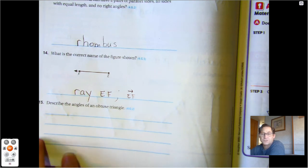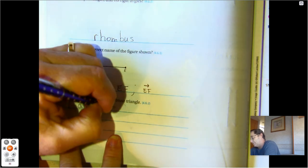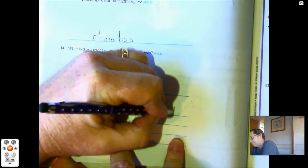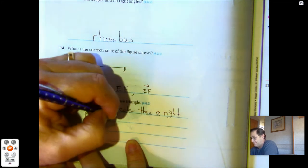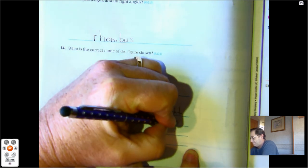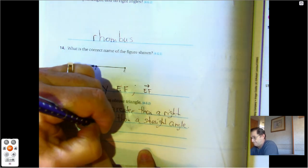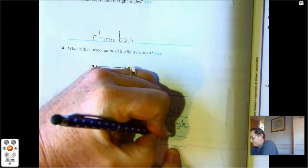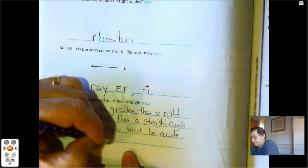Describe the angles in an obtuse triangle. One angle is greater than a right angle but less than a straight angle. The other two angles must be acute angles—must be acute or less than a right angle.